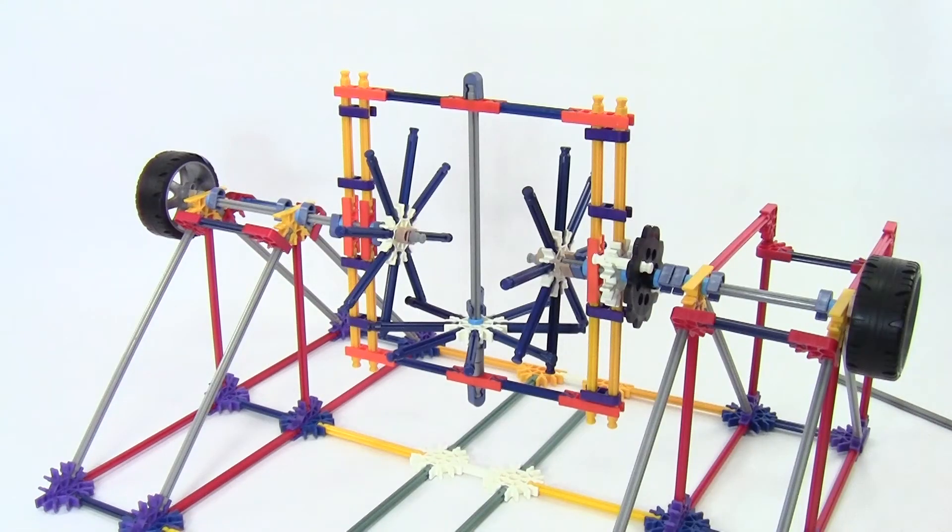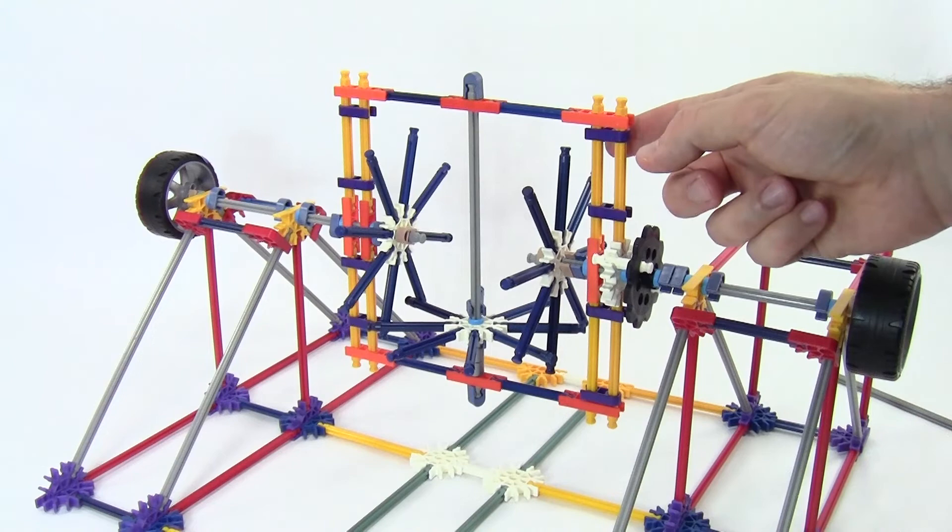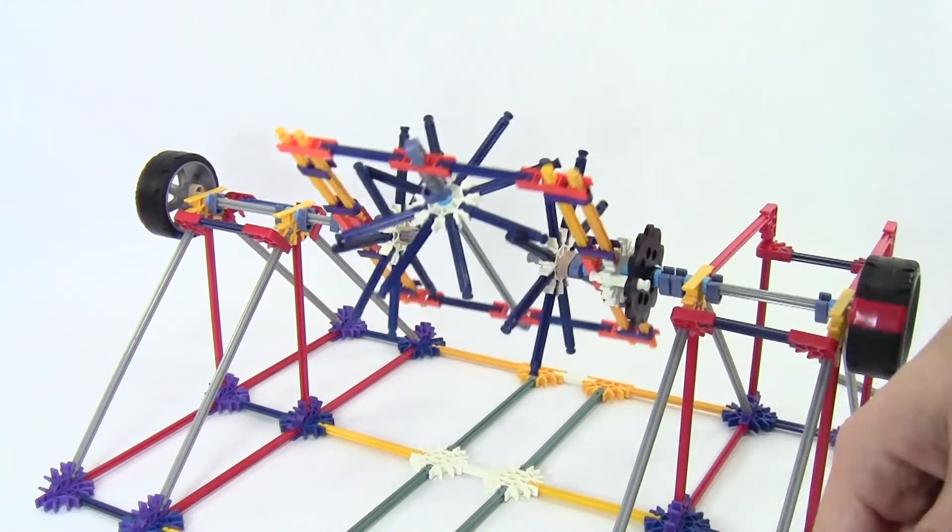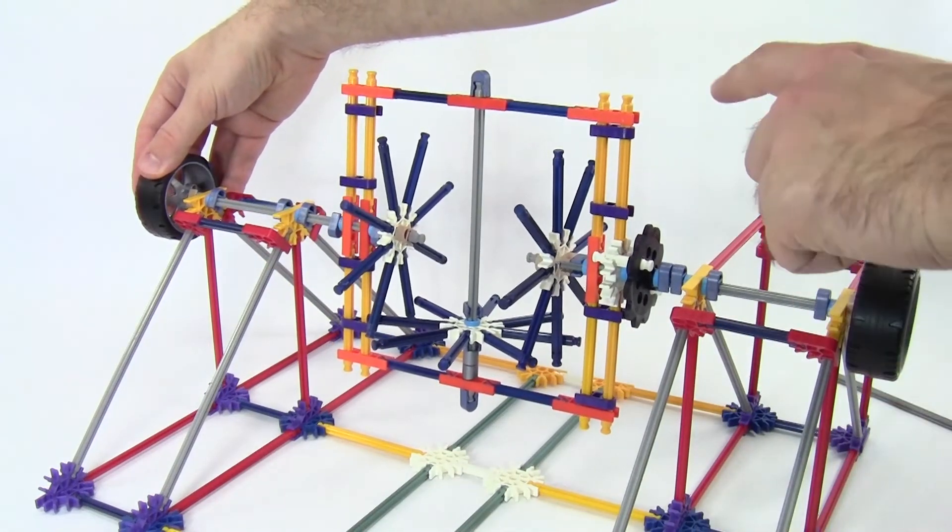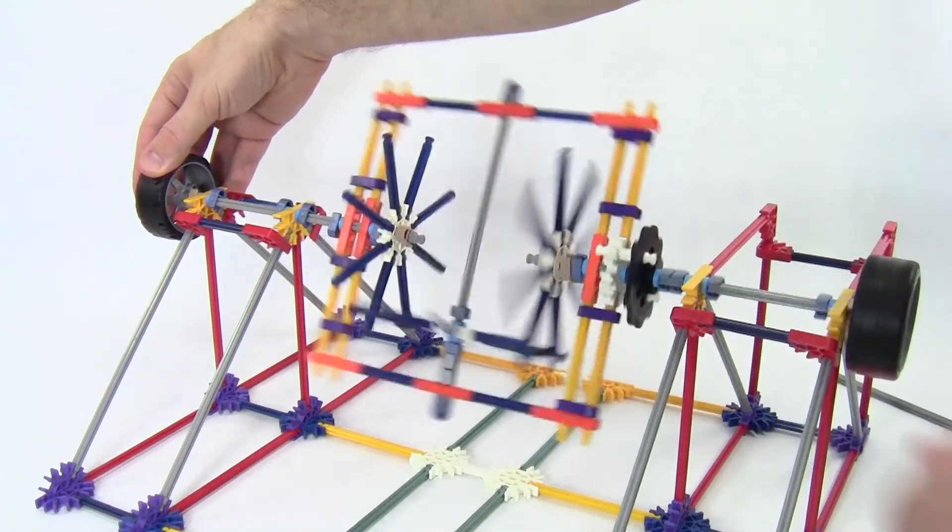We now have a working differential. If the amount of resistance on both wheels is the same, they will rotate together. If one of the wheels gets stuck, the gearing mechanism will allow the other wheel to keep rotating.